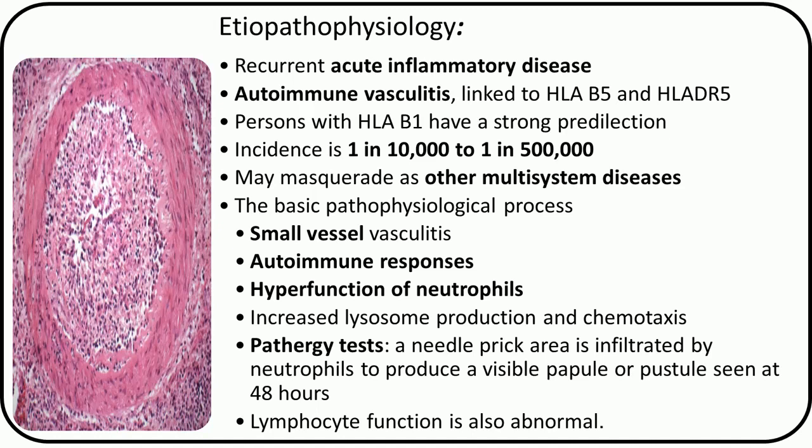Persons with HLA-B1 have a strong predilection to develop Bessett's disease. Incidence is 1 in 10,000 to 1 in 500,000. This disease is present in India rarely and it may masquerade as other multi-system diseases.